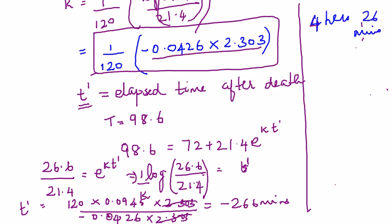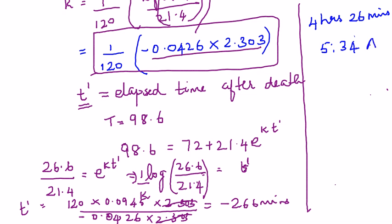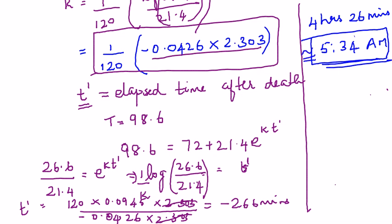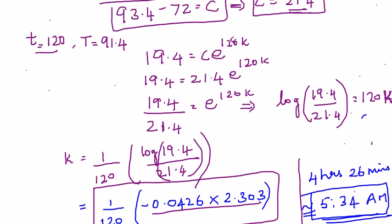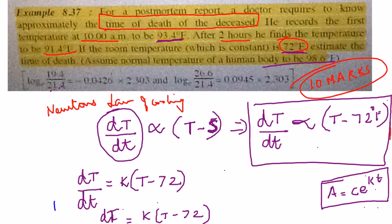266 minutes divided by 60 gives approximately 4 hours and 26 minutes. The first recorded temperature was taken at 10 o'clock in the morning, so 10:00 AM minus 4 hours 26 minutes gives 5:34 AM. This is the approximate time of death.